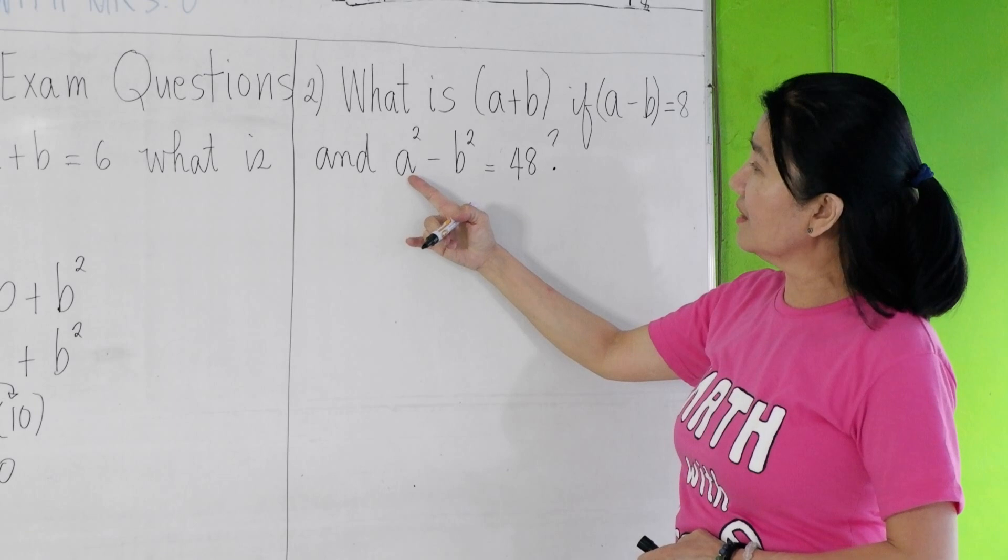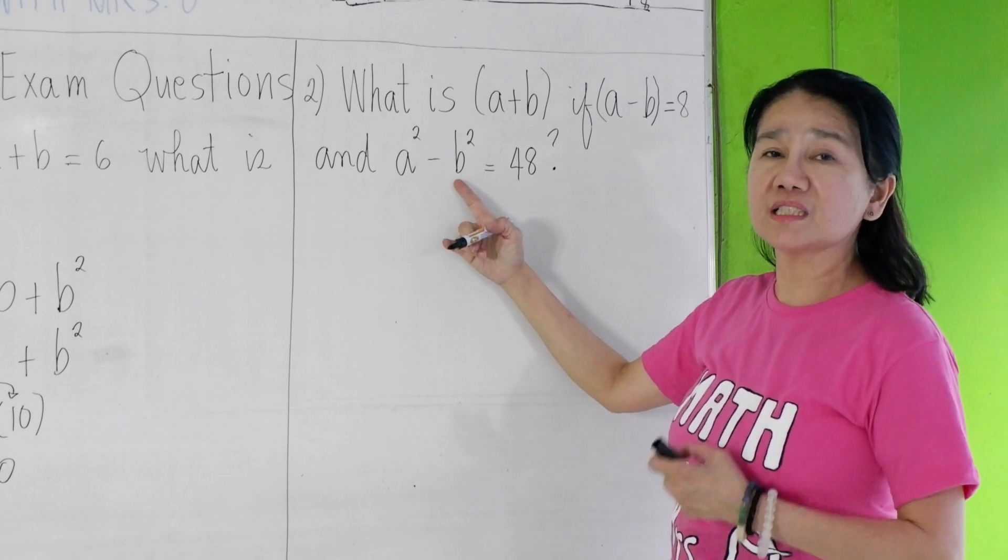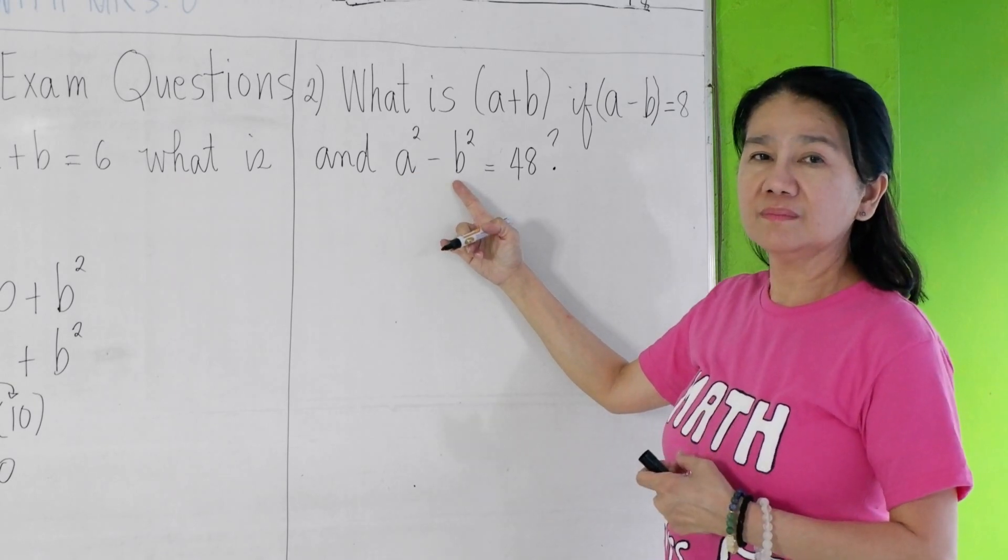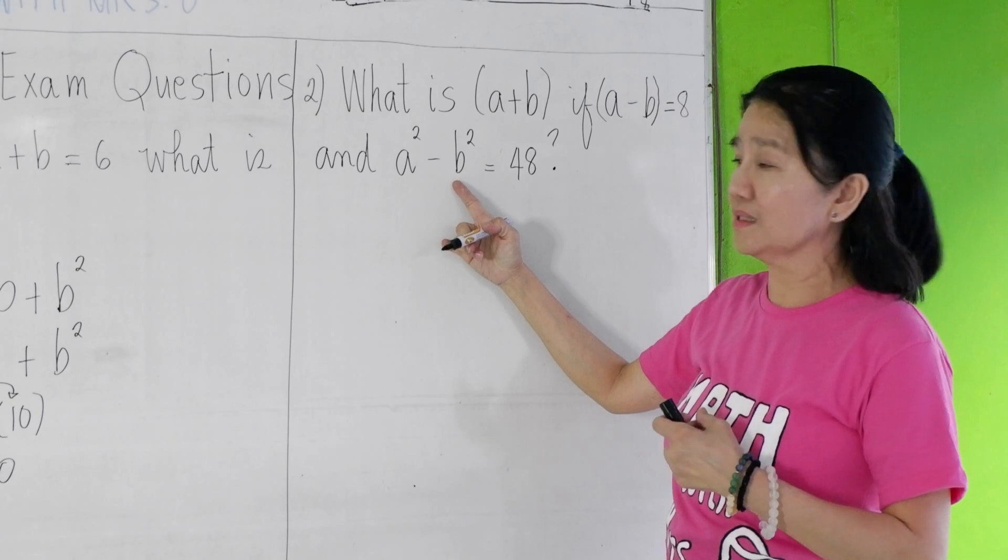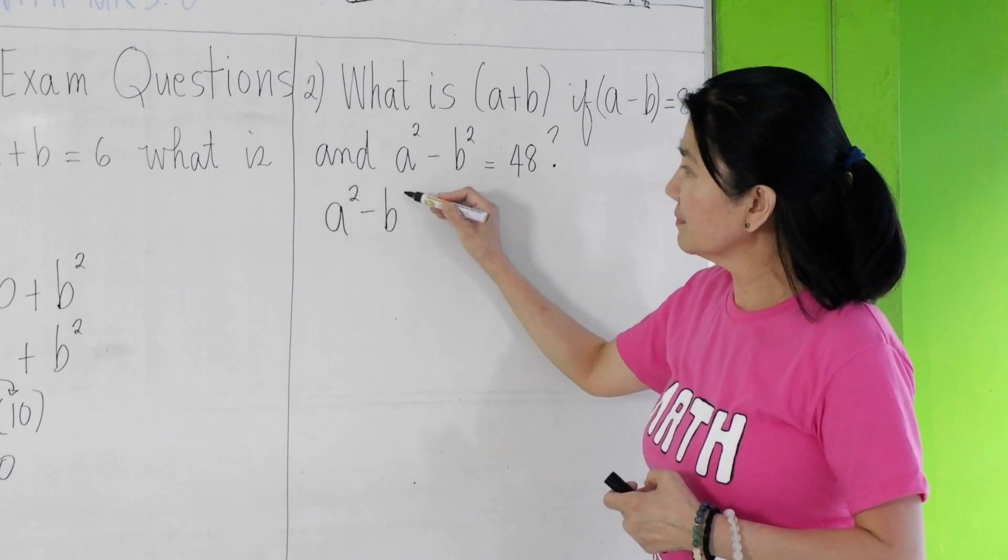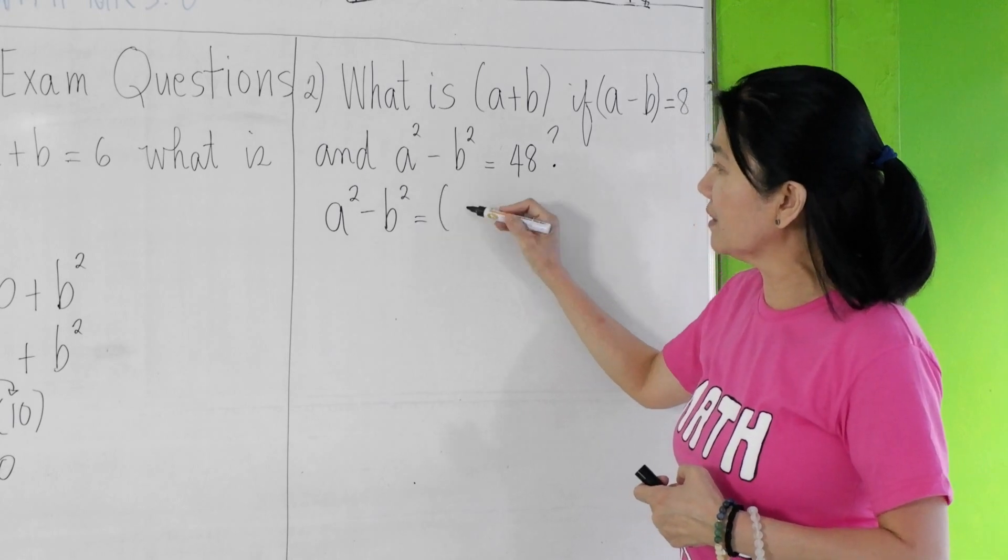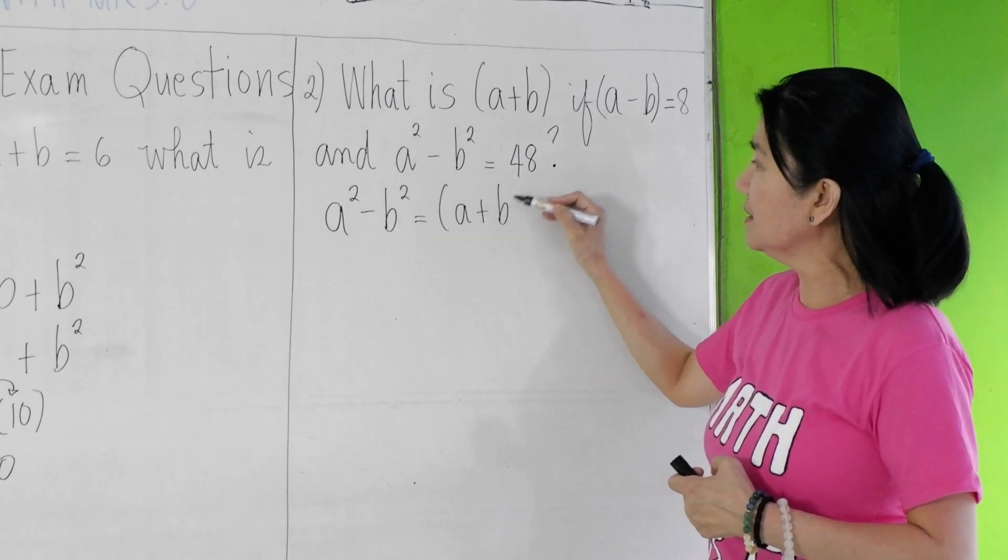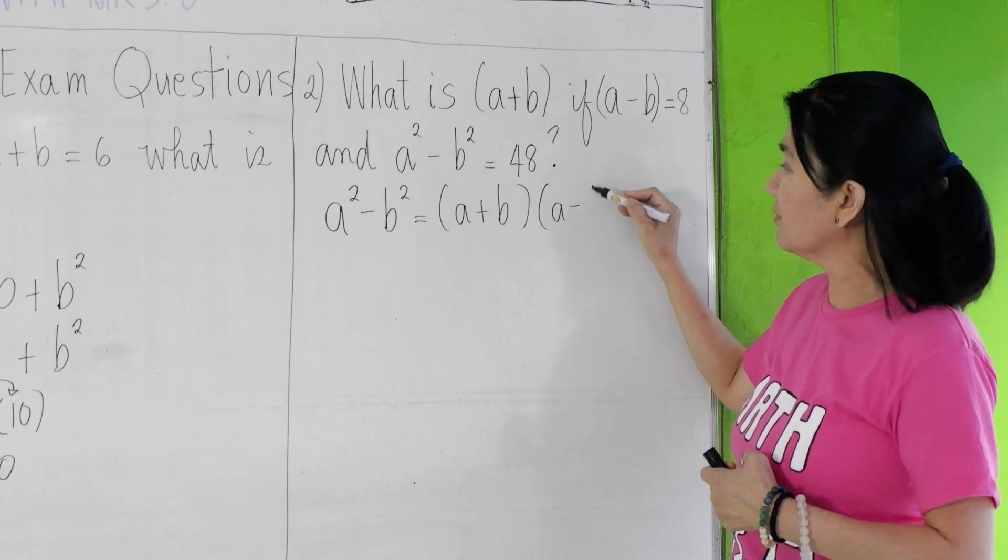Observe that a²-b² is a special product called the difference of two squares. So we factor it as a difference of two squares. We have (a+b) times (a-b).